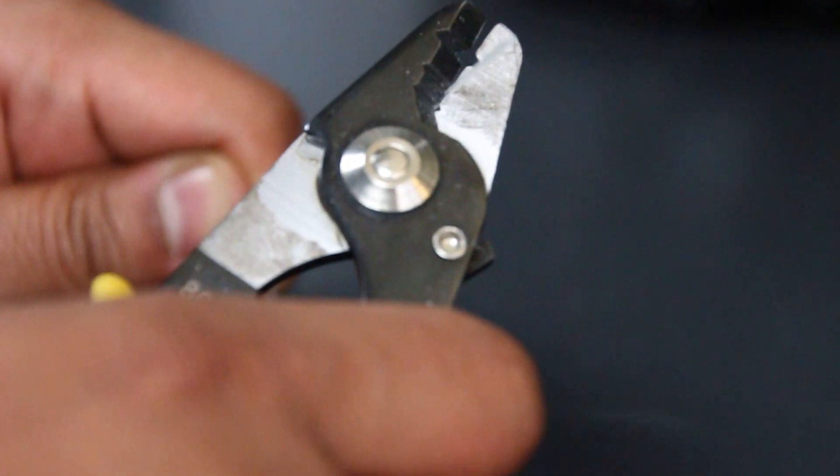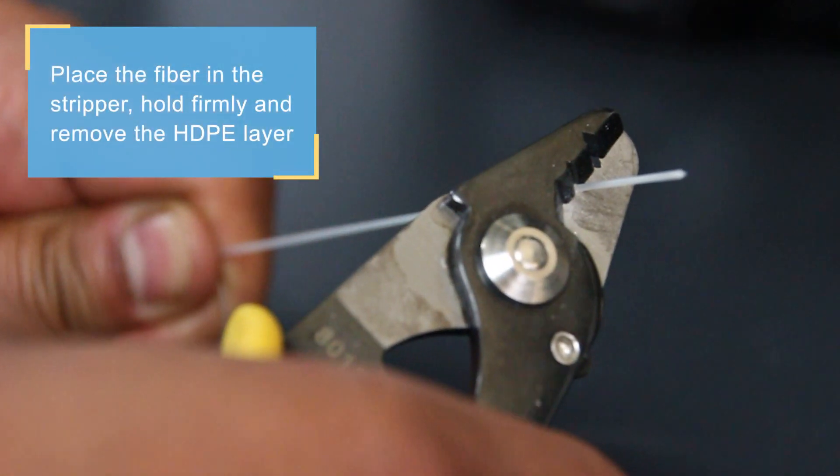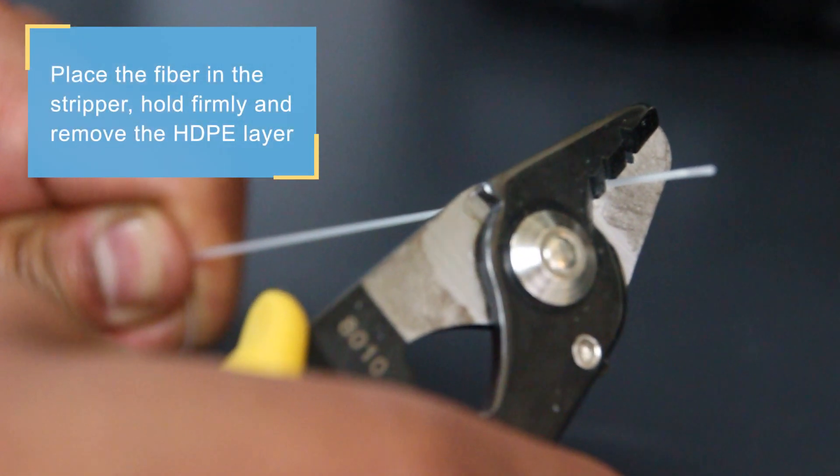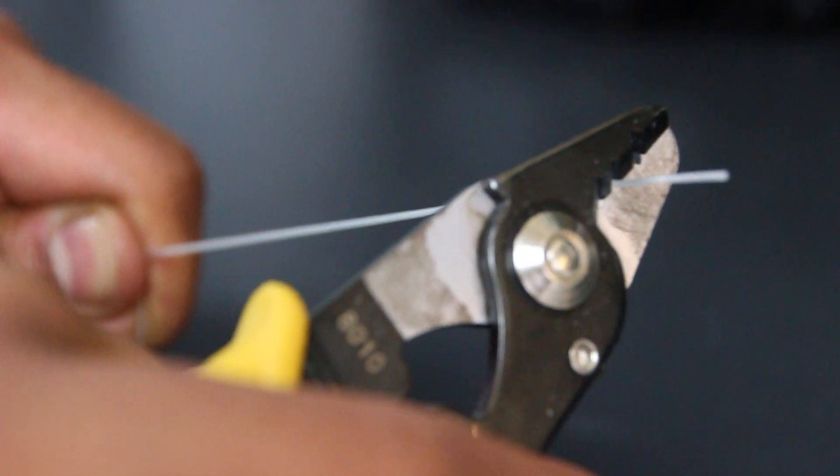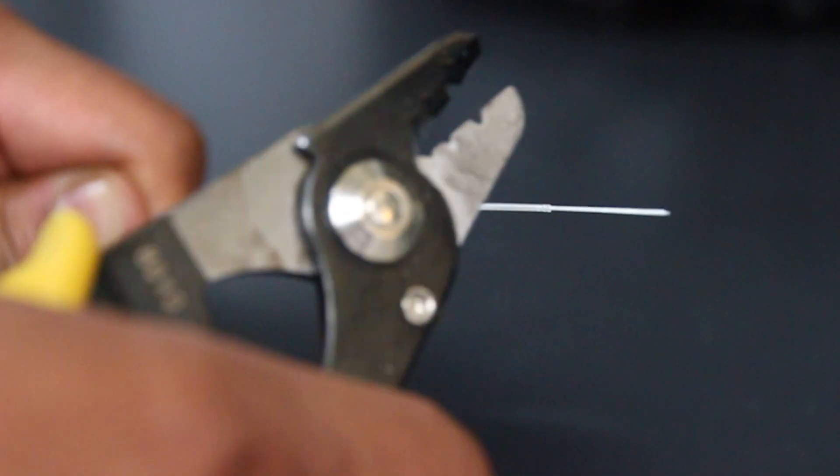Let us show you a bit slower. First, the outer HDPE layer. Place the fiber in the middle groove of the stripper. Press enough to cut through the first layer. Hold firmly and strip the encapsulation.